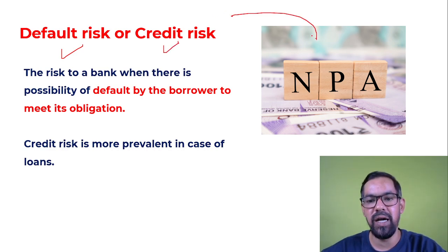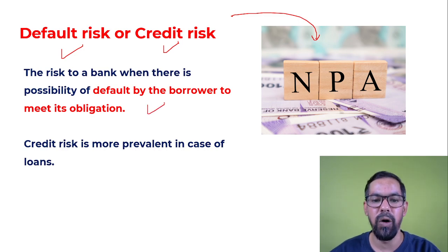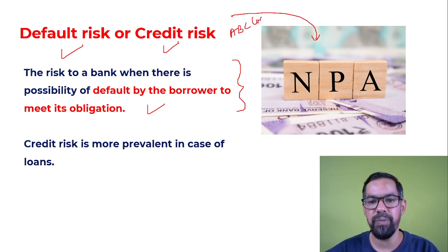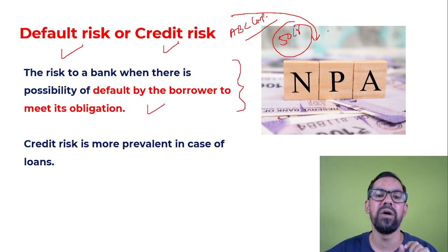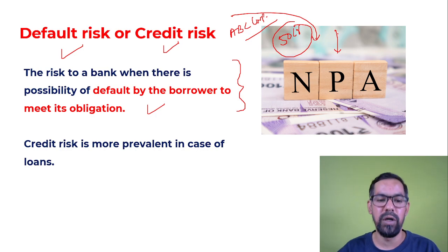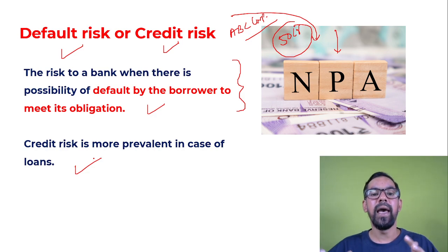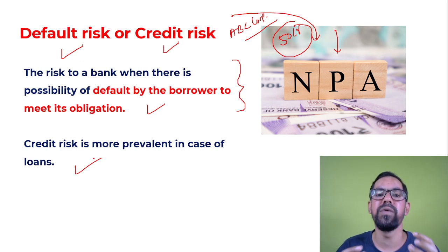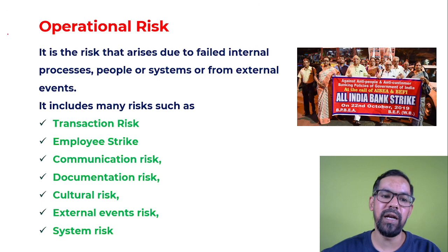Default risk or credit risk: in banking this is basically NPA — non-performing assets. This is the risk to a bank when there is a possibility of default by borrowers to meet their debt obligations. For example, a bank lends 50 crore rupees to ABC Corporation. After some time that organization's business fails and they cannot return the money — they become NPA or default. Credit risk is most prevalent in case of loans and applies to lenders who lend money.